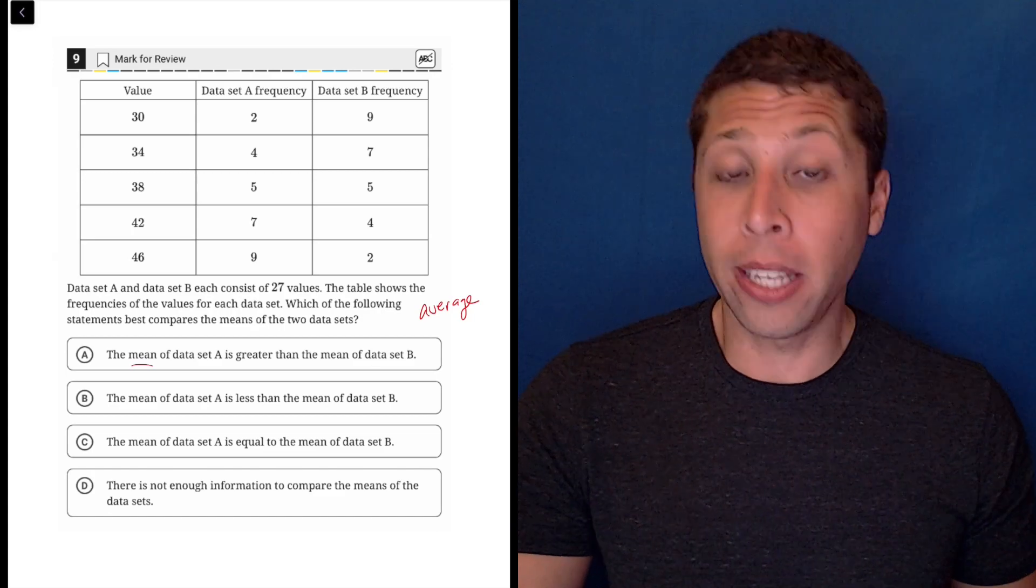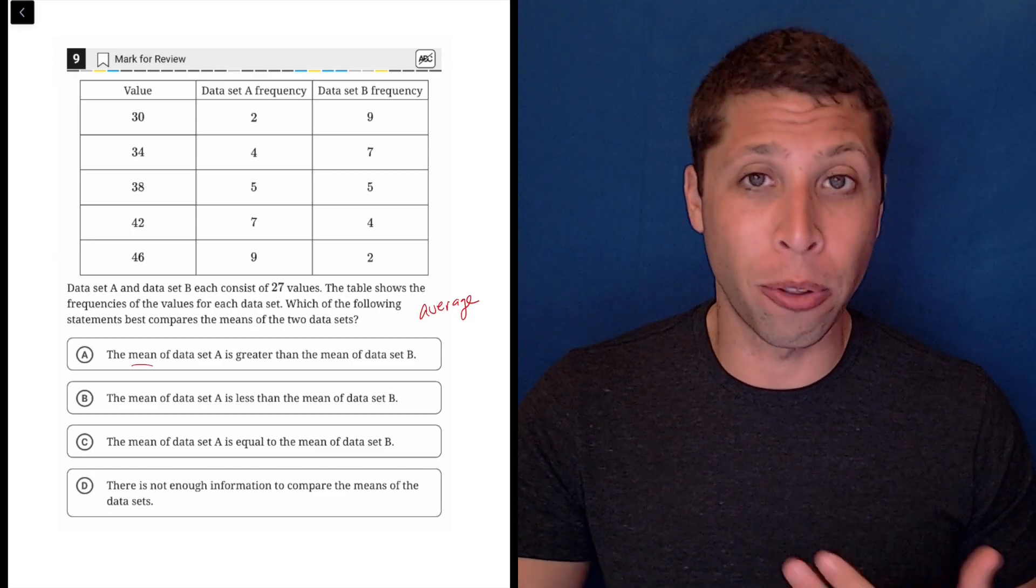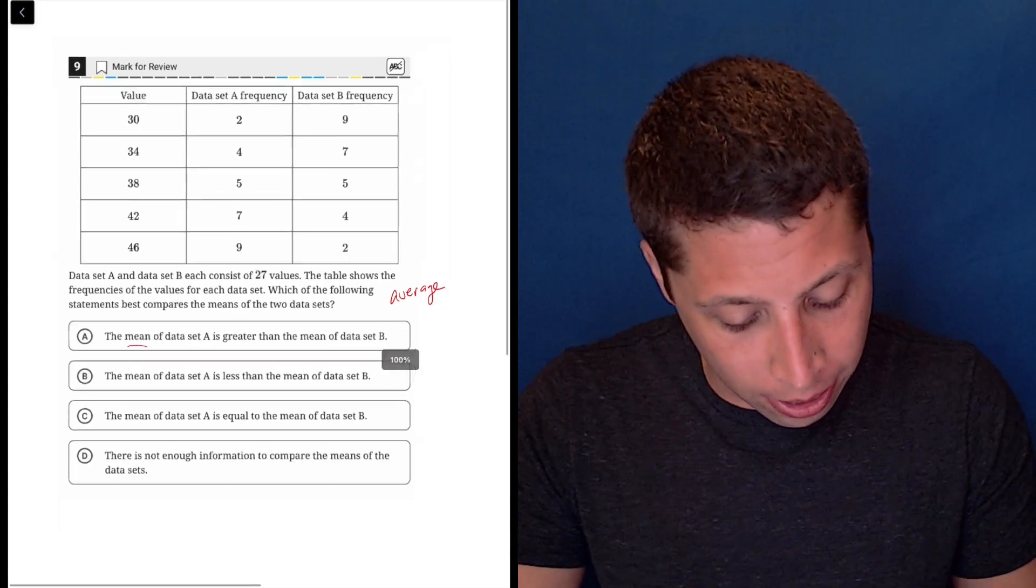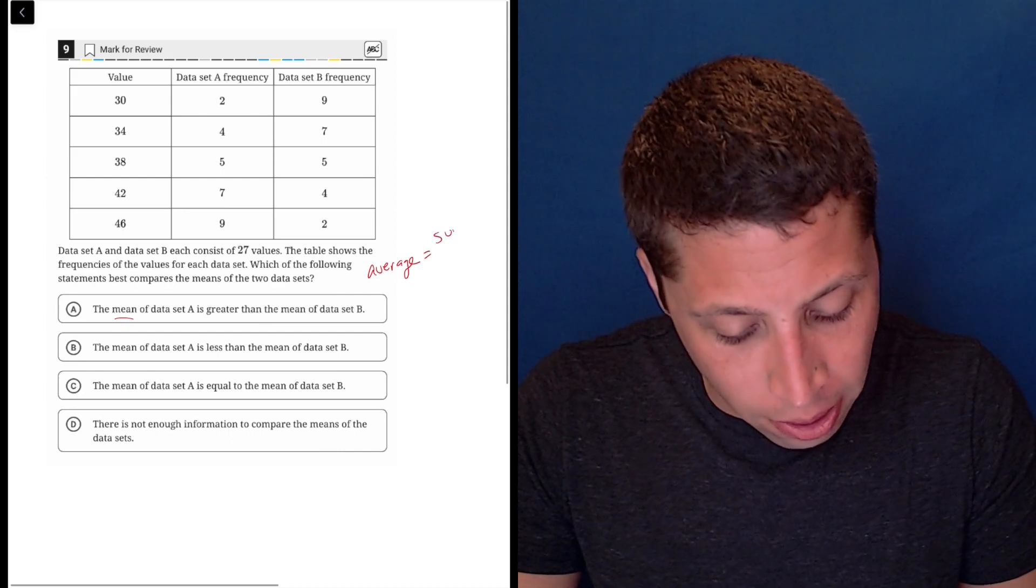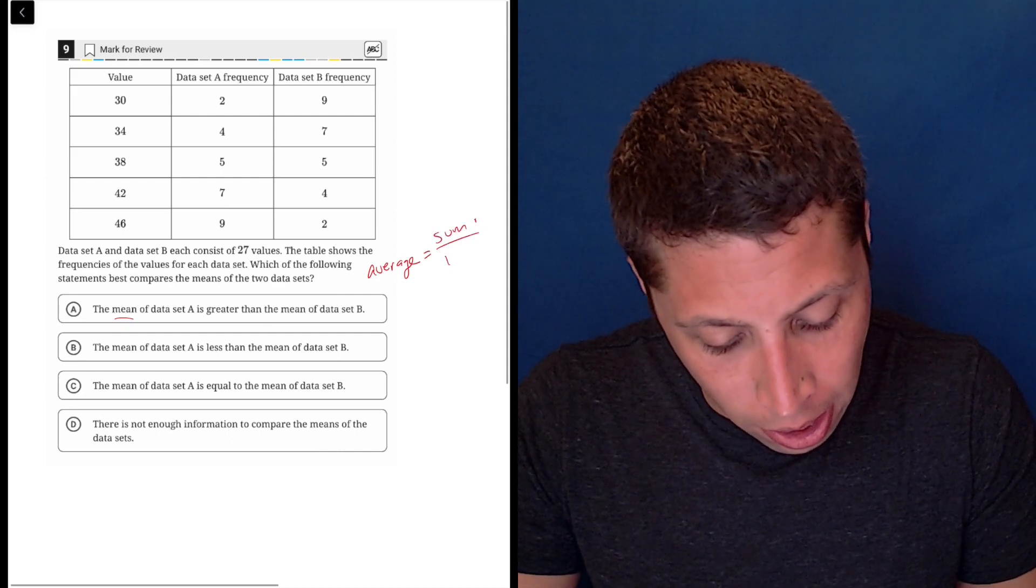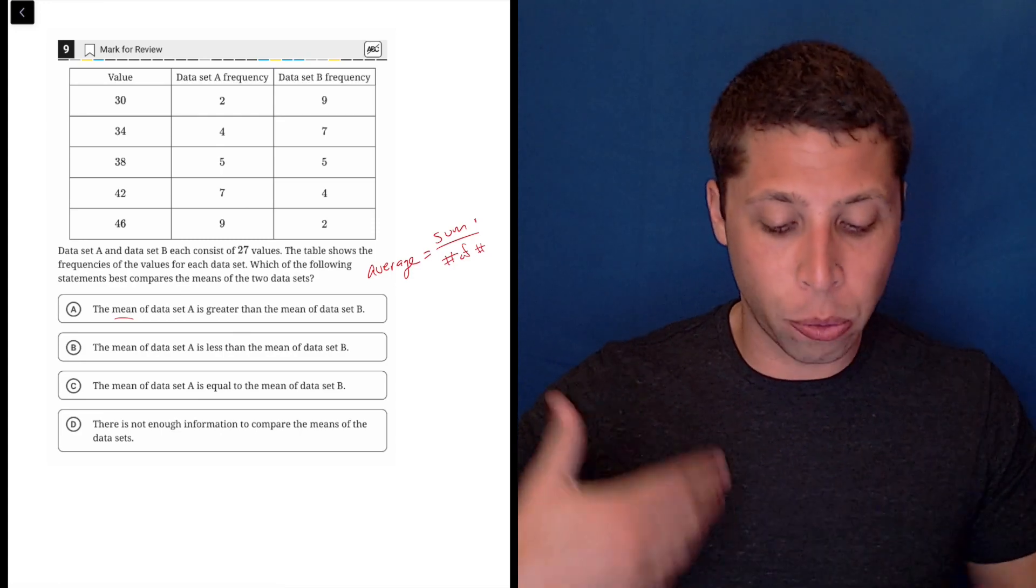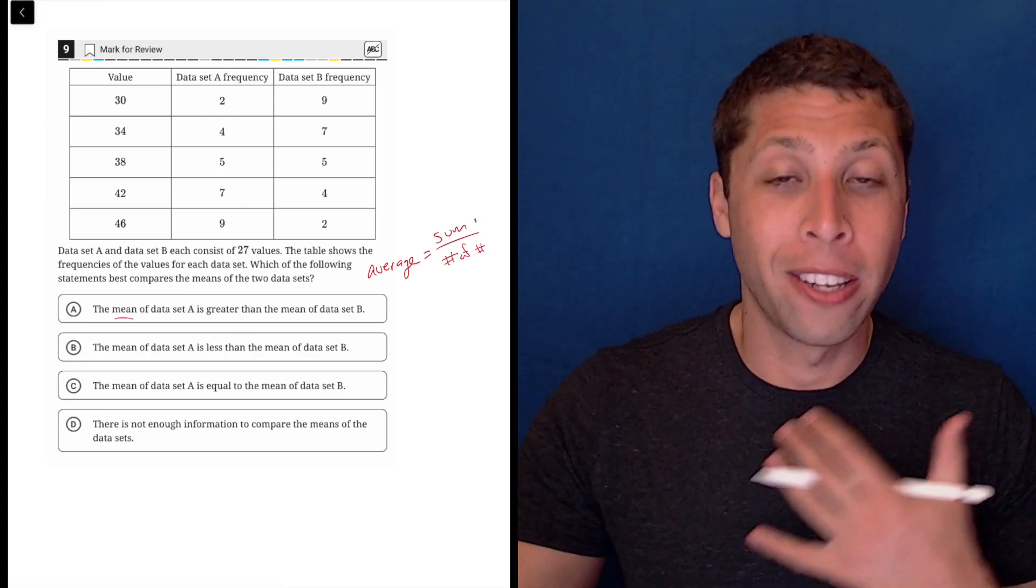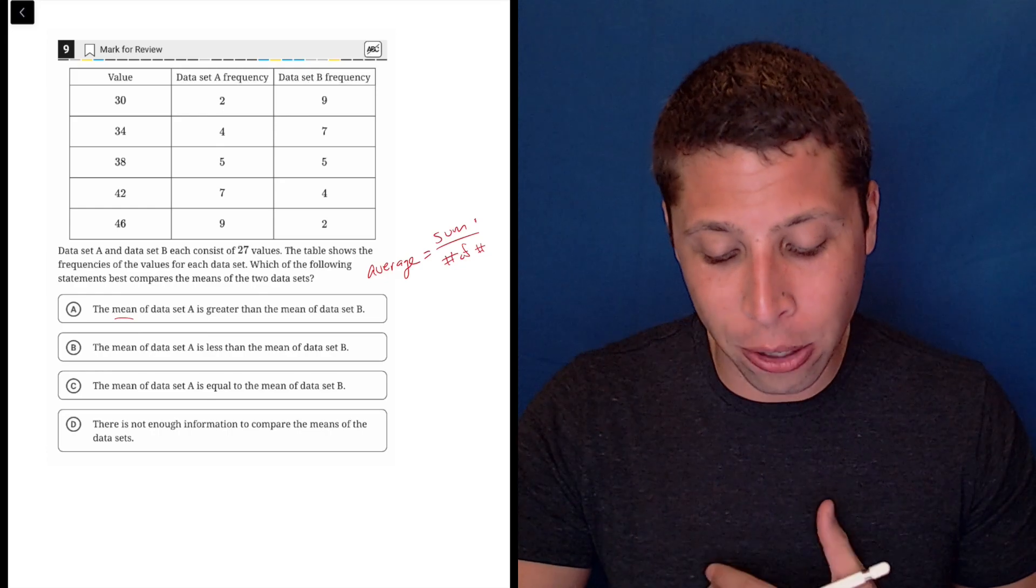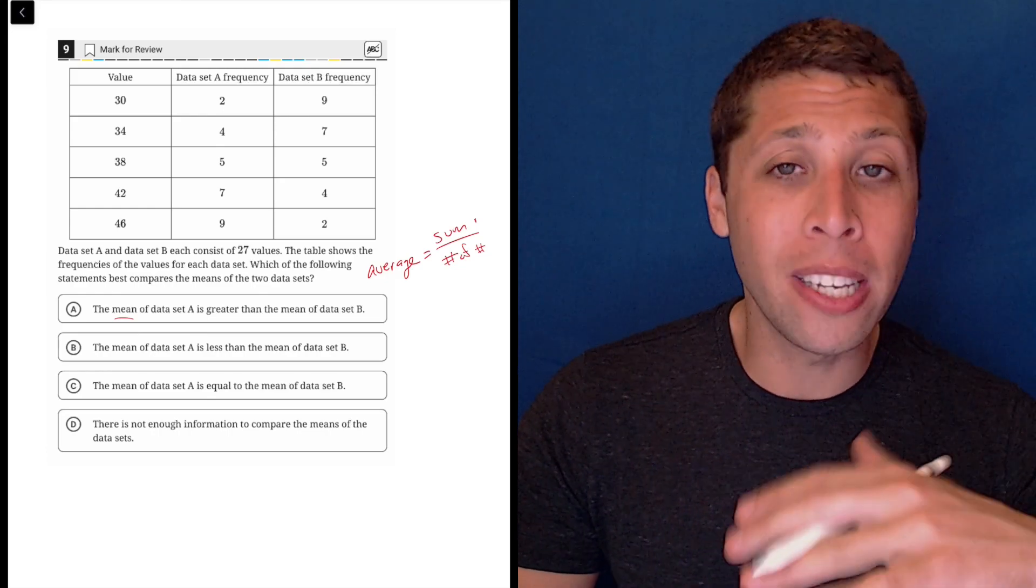And that is something that hopefully you know how to solve for, right? You know the formula for average is the sum of the numbers over the number of numbers in a set. And that's complicated in this case because we have a frequency chart, we have two different sets of values, but we don't even need to use this formula at all.